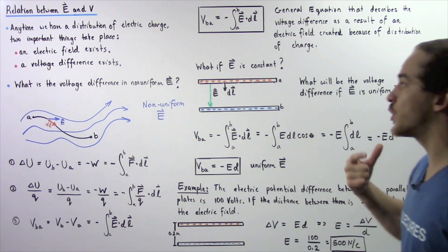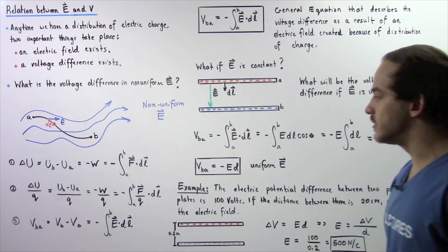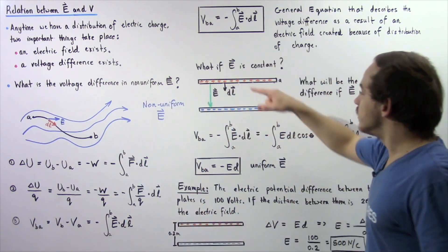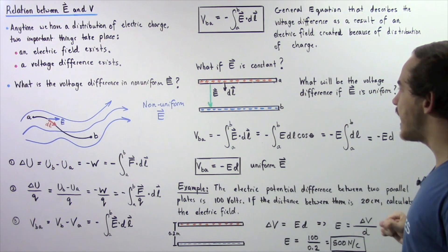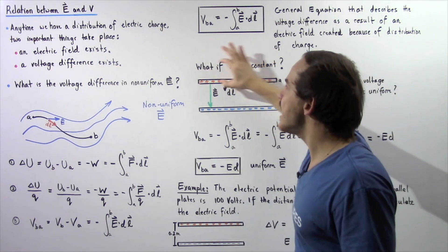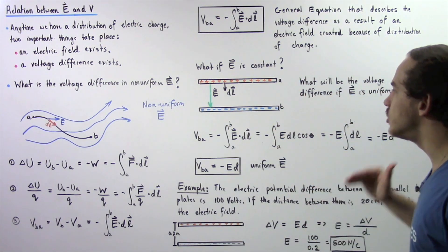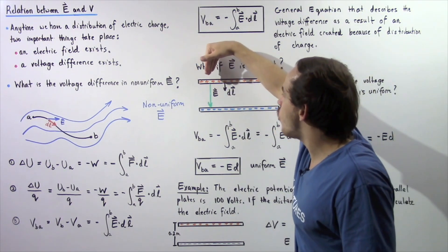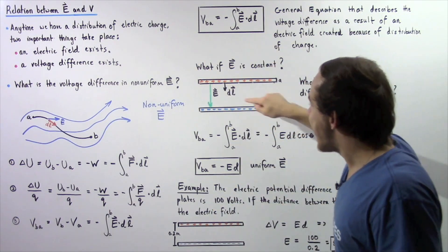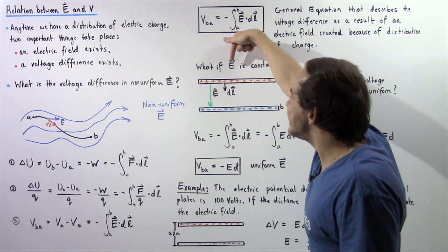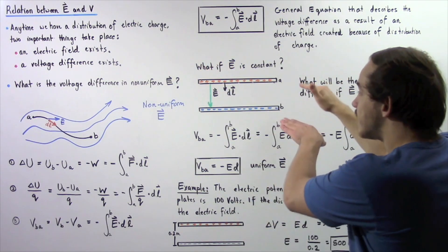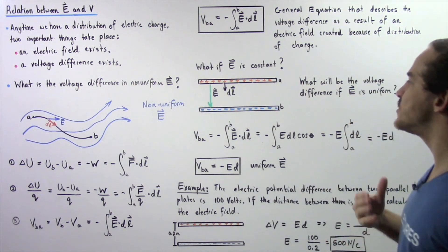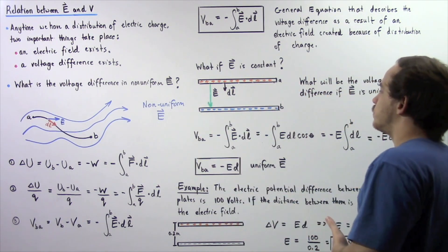We see that our voltage difference is created as a result of the presence of an electric field. Now, what happens if the electric field is in fact uniform — if it's constant? Let's suppose we have two parallel plates: a positive plate at the higher potential and a negative plate at the lower potential. Our electric field lines begin on the positive and end on the negative, pointing directly downward. In this case, our infinitely small distance dL points in the same direction as our electric field, and the electric field is constant. We're assuming that the distance between the two plates is much smaller than the entire length of the plates.